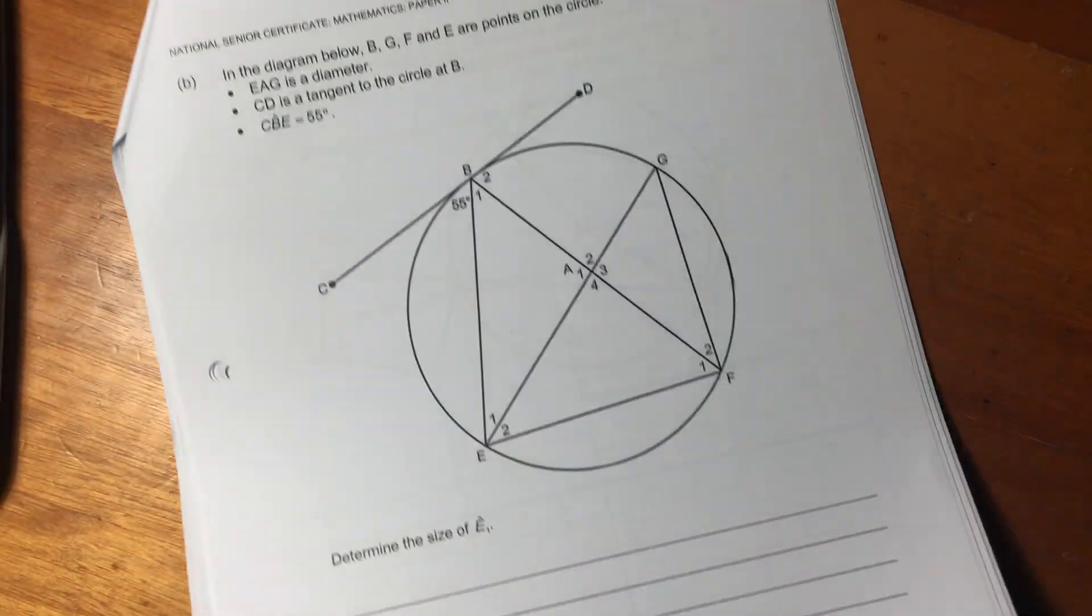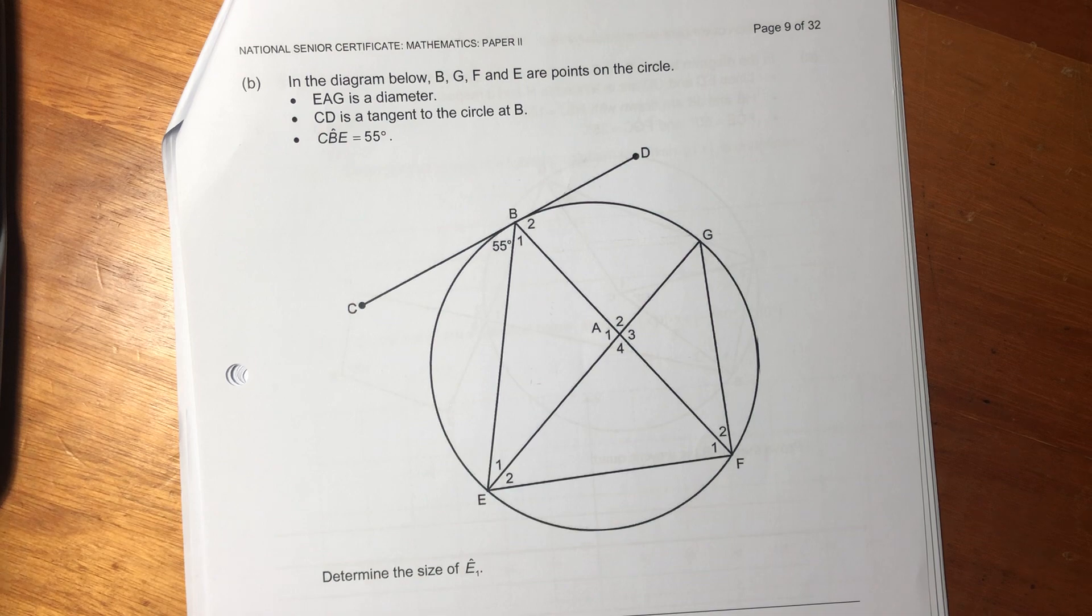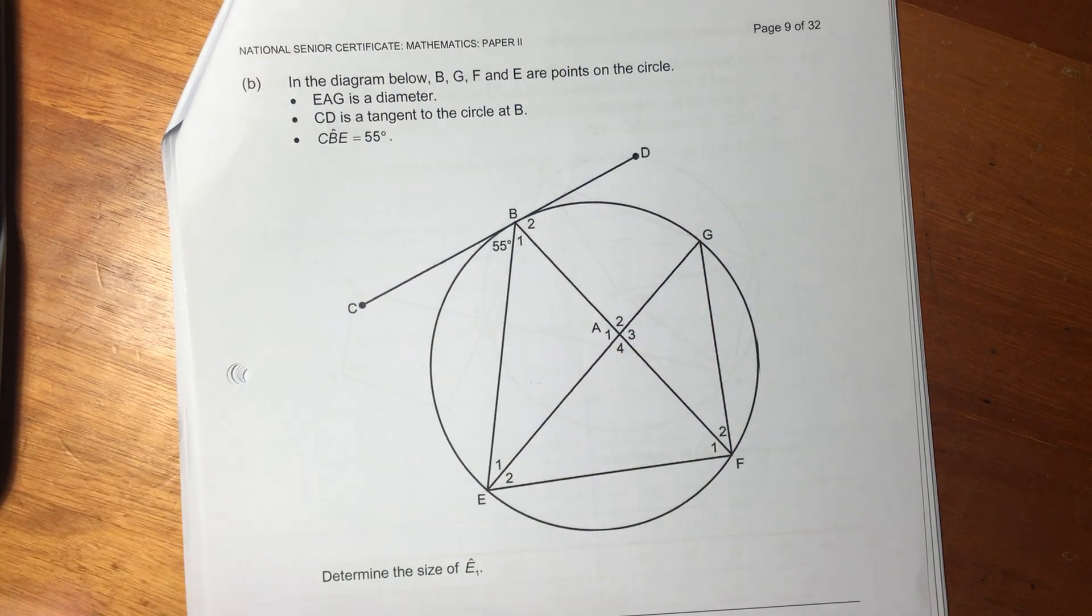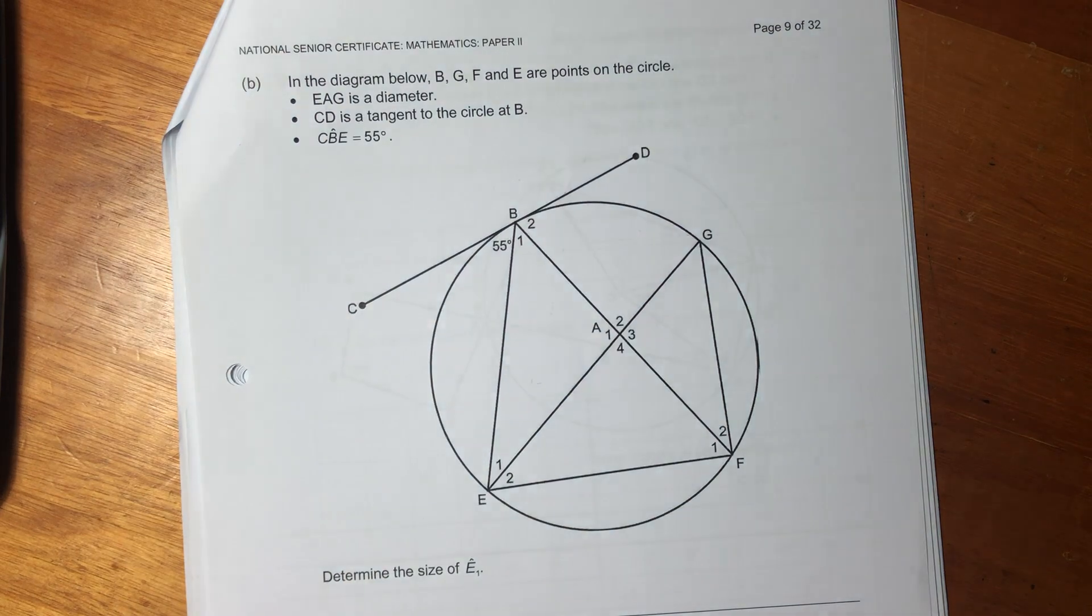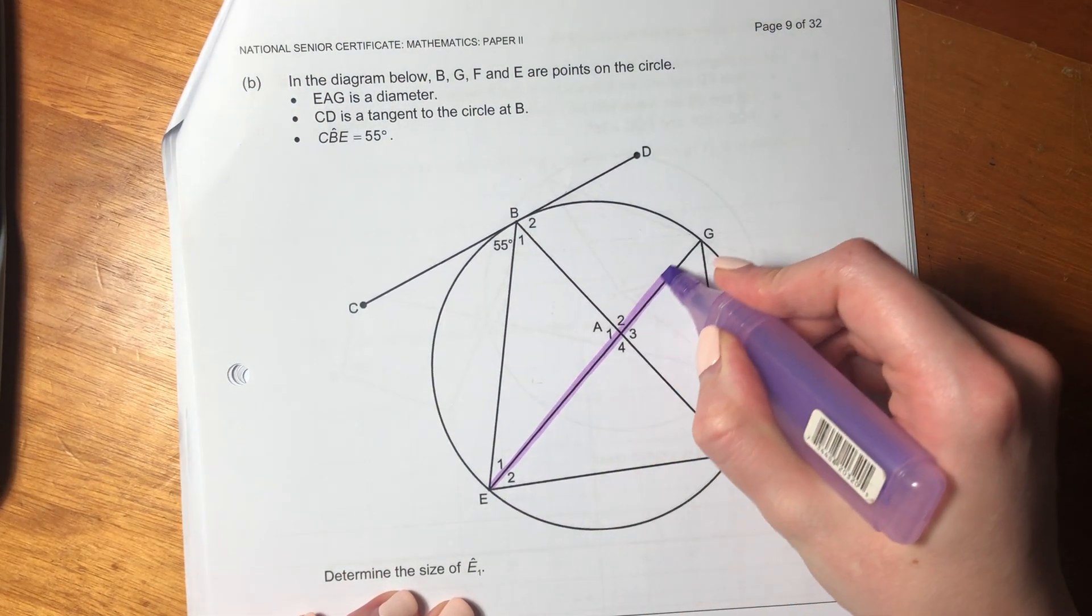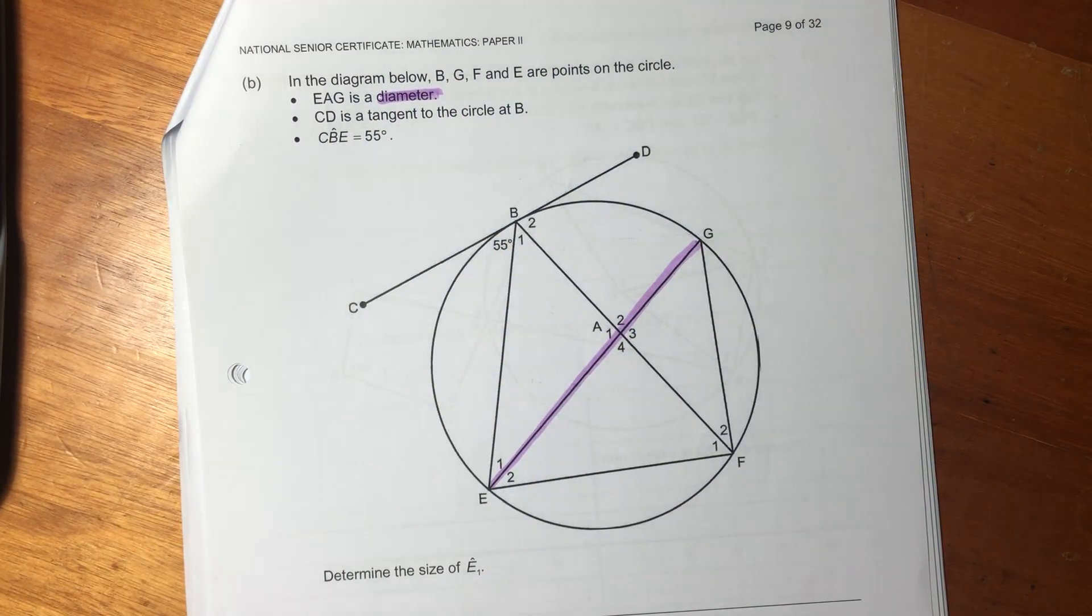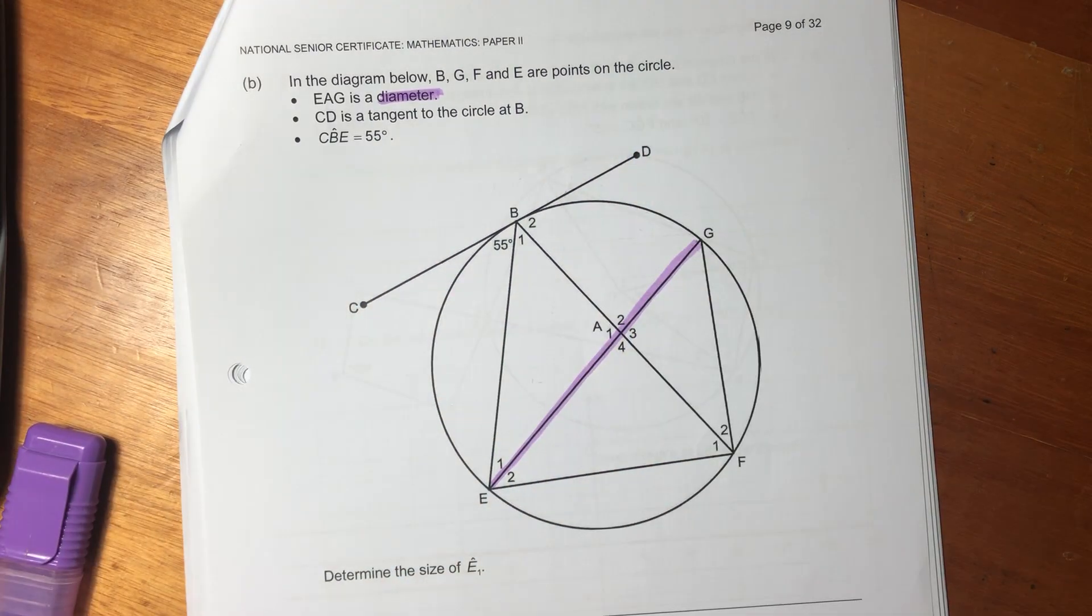Let's move on to the next question. So now in this question, it says, in the diagram below, B, G, F, and E are points on the circle. E, A, G is a diameter. So this is the diameter. It's always good with geometry questions to have a little highlighter on hand because it just helps understand what's going on. C, D is a tangent to the circle. Then it says CBE is 55 degrees. So now it says, determine the value of E1. So where is E1? Here's E1. That's what we want to work out.